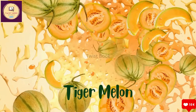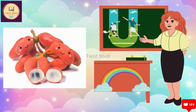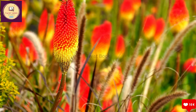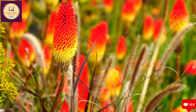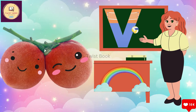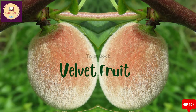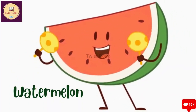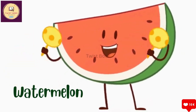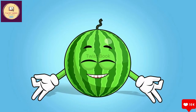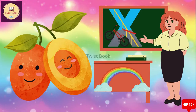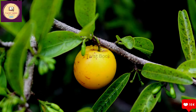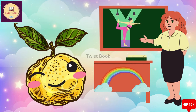S for strawberry. T for tiger melon. U for ugli fruit. V for velvet fruit. W for watermelon. X for ximenia. Y for yuzu.